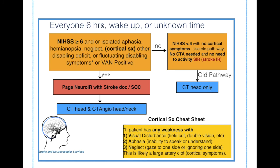This same protocol applies up to six hours, but also for wake-up or unknown time of onset strokes. Unknown onset could have been only an hour ago; a patient who woke up with a stroke at seven AM could have had the stroke at six AM — only one hour in. So it's very important: unknown time of onset and wake-up strokes should activate the stroke team, perform a VAN exam, and an NIH stroke scale to determine if the patient is eligible for treatment beyond TPA.